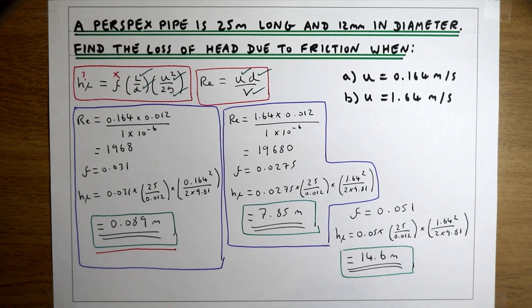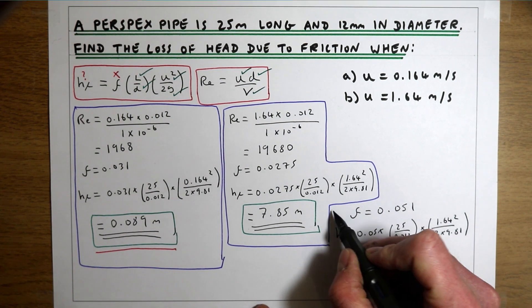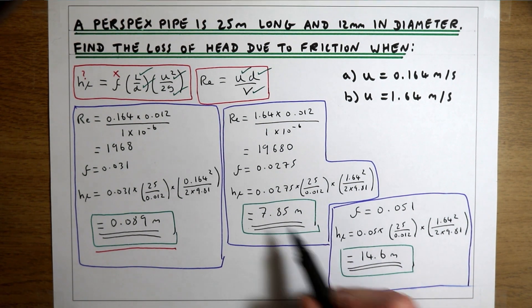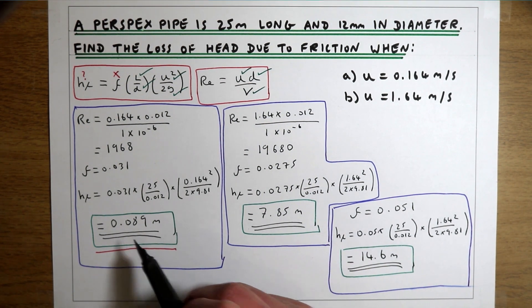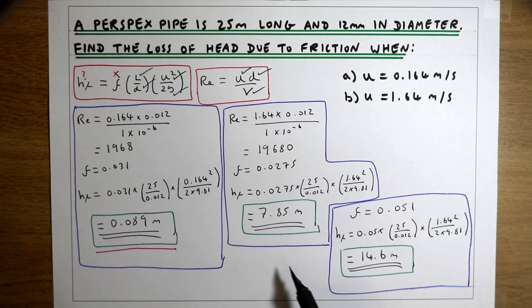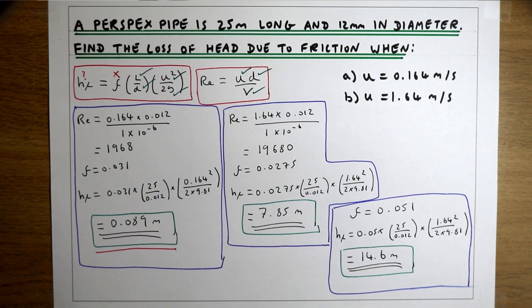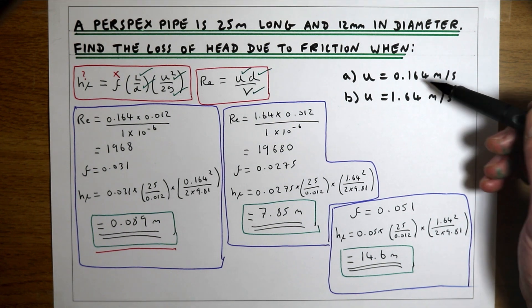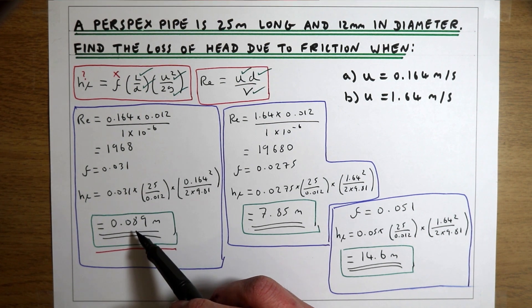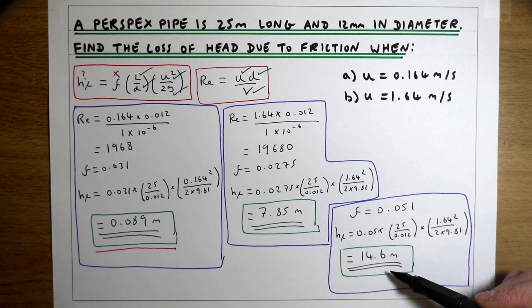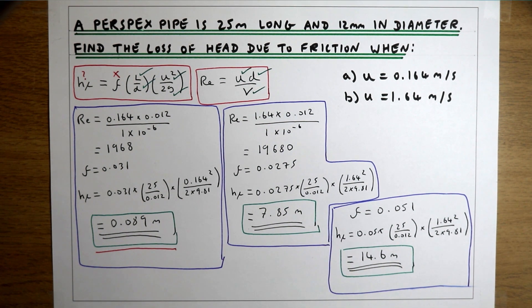All we've done is transition from a smooth perspex pipe to a rougher concrete pipe, and this has effectively doubled the loss of energy. Going from laminar to highly turbulent flow increased losses by a factor of about 88, and switching from a smooth to a rough pipe added another factor of 2. In summary, using the Moody diagram for two different velocities, we've calculated head loss for laminar flow in a smooth pipe, turbulent flow in a smooth pipe, and turbulent flow in a rough pipe.